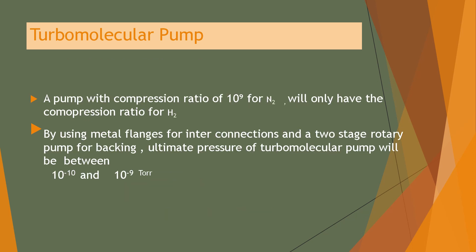In summary, the turbo molecular pump schematic diagram shows the stator, rotor, inlet port, exhaust valve, and housing as its main components. The rotor is rotating while the stator is fixed, with blades fixed to both the stator and rotor.